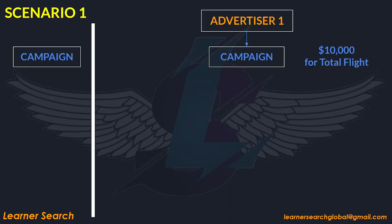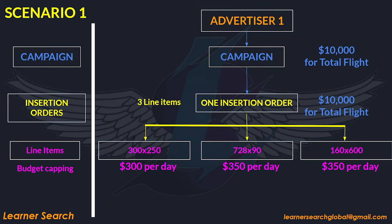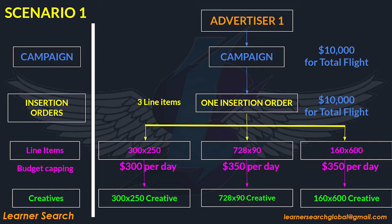Now we shall go through the first scenario in this example. Since this campaign is all about display, I am planning to run everything under a single I.O. We shall create a single campaign, single I.O., and 3 line items which represent creative sizes and assign respective creatives. With this structure, we can make sure that the planned budget for respective creative sizes can be allocated strictly.